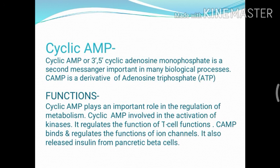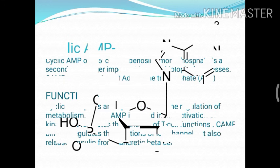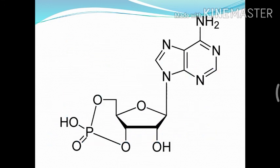Now we will look at the functions of cyclic AMP. Cyclic AMP plays an important role in the regulation of metabolism. The activation of protein kinase is done by cyclic AMP. It also regulates the function of T cells. cAMP also binds to and regulates the function of ion channels. Cyclic AMP also helps in releasing insulin from pancreatic beta cells. This is the structure of cyclic AMP.